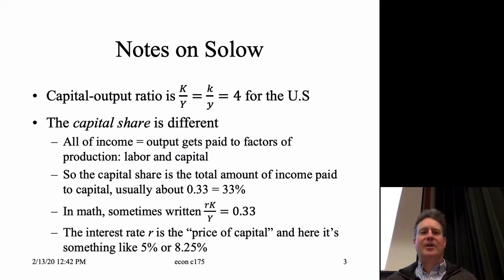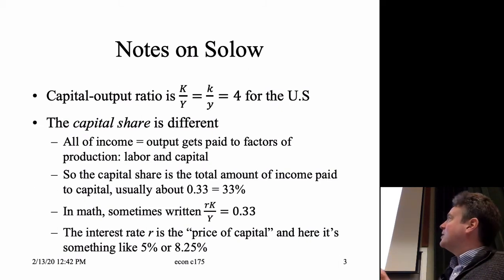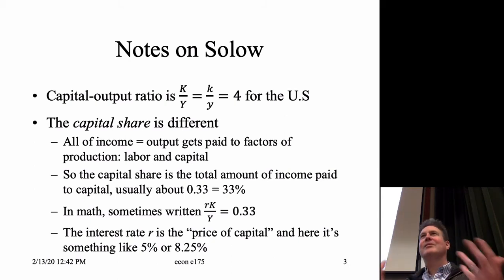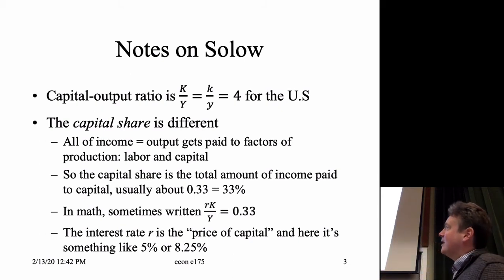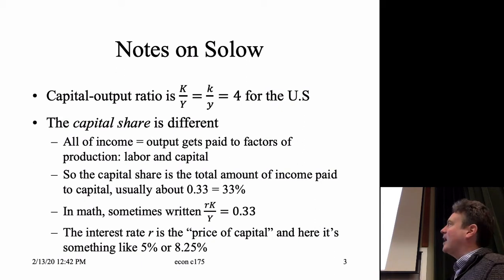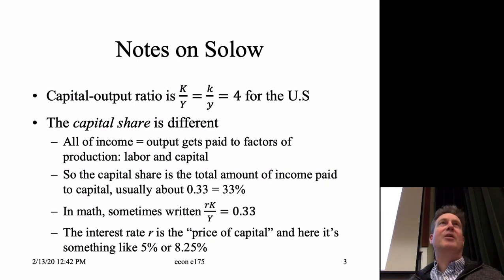One thing I wanted to mention is the big distinction between the capital-output ratio — big K over big Y — which is a number like four for the United States, and the capital share. The capital share typically means the share of all income that is paid to capital. The payment rate or price of capital is the interest rate, or the marginal product of capital — little r. The capital-output ratio times the interest rate equals the capital share.